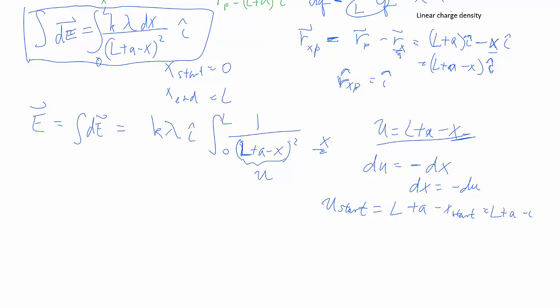and u end is equal to L plus a minus L, which gives us a. Now it looks a little funny because it seems like we're going backwards, so to speak. But that is just a function of the fact that we're replacing u with something with negative x in it. If we follow everything through, everything's going to work out. So we go ahead and replace all those stuff.